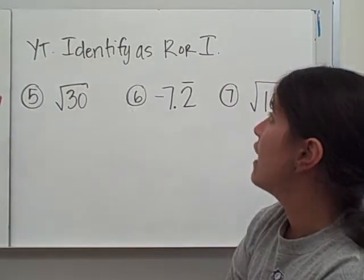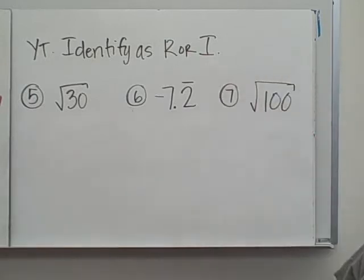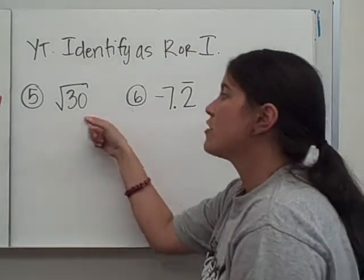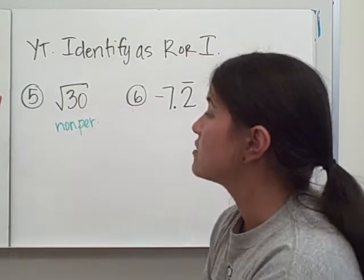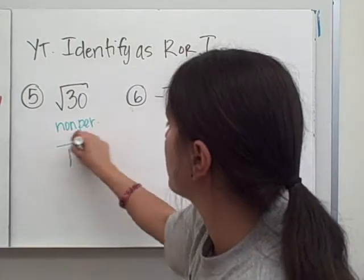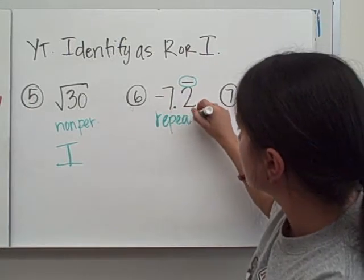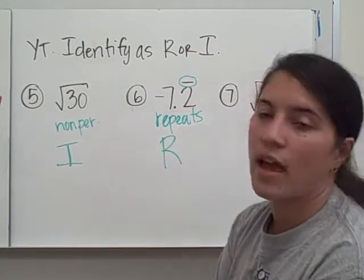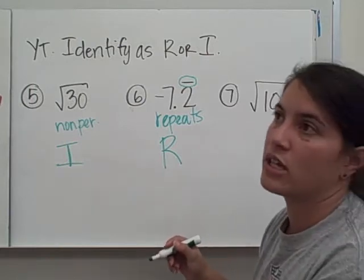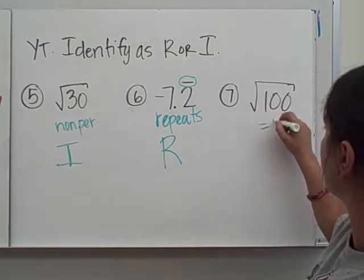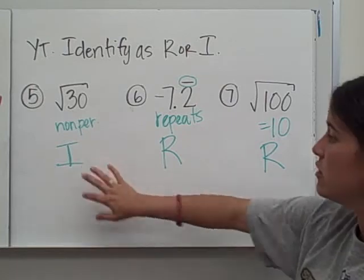Now I want you to try these — identify as rational or irrational. Pause it and then press play when you're ready to check your work. The square root of 30: 30 is a non-perfect square, so it's irrational. Number 6: negative 7.2 with bar notation — the bar means it repeats, so it's a rational number. Number 7: square root of 100 — 100 is a perfect square, the square root of 100 is 10, and 10 is a whole number, so that is rational.